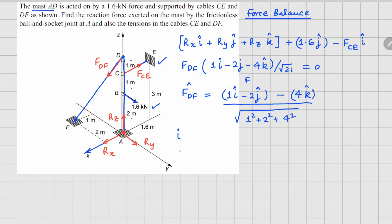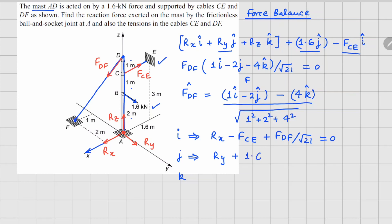Separating the force balance into components: the i-component gives Rx minus F_CE plus F_DF divided by √21 = 0. The j-component gives Ry plus 1.6 minus 2·F_DF divided by √21 = 0. The k-component gives Rz minus 4·F_DF divided by √21 = 0.